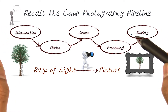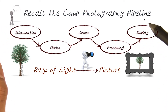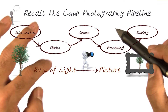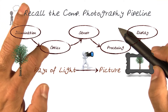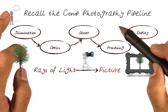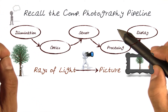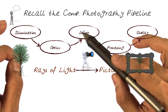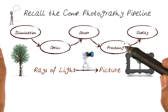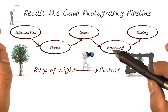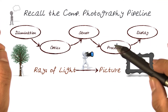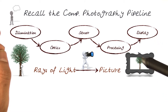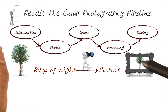Recall that the main aspects of computational photography started with illuminating the scene, then the optics used to take the light information and get it onto a sensor, which was then converted into an image. We can then do various types of image processing on it to display a picture like this.